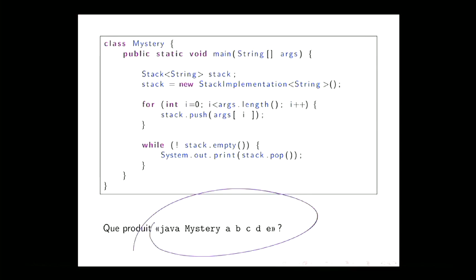On a l'idée qu'on peut utiliser une pile sans en connaître l'implémentation. J'essaie toujours de commencer par une utilisation pour que ce soit clair comment on l'utilise et comment on n'a pas à se préoccuper de l'implémentation. J'ai une petite classe que j'appelle « mystère ». J'ai une référence de type pile stack — une pile dans laquelle on peut sauvegarder des entiers. Je crée un objet pile.